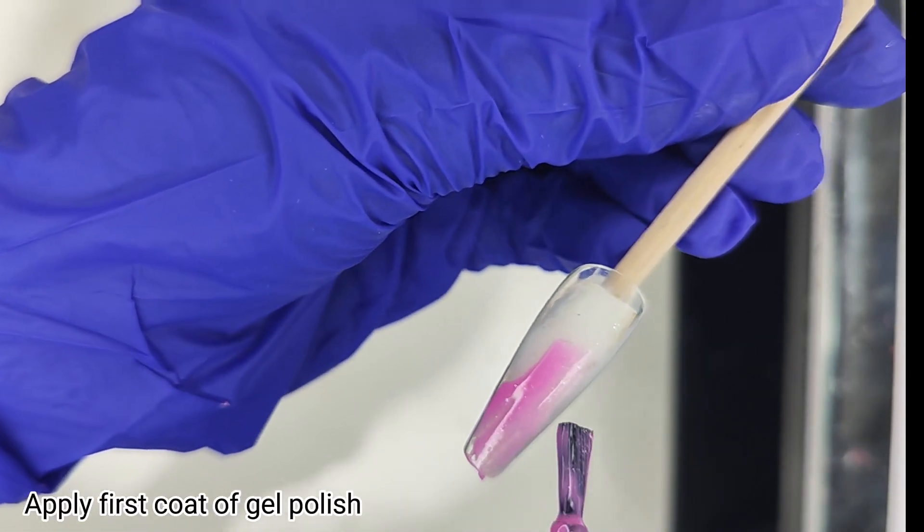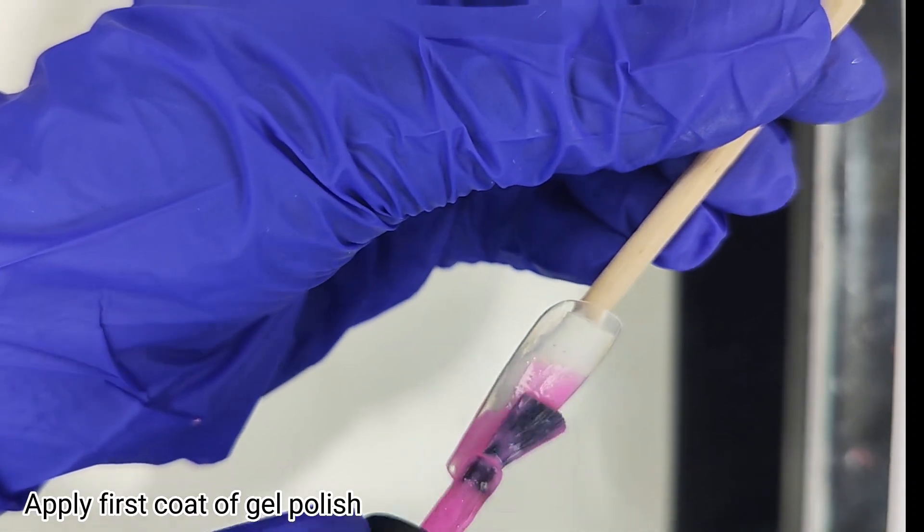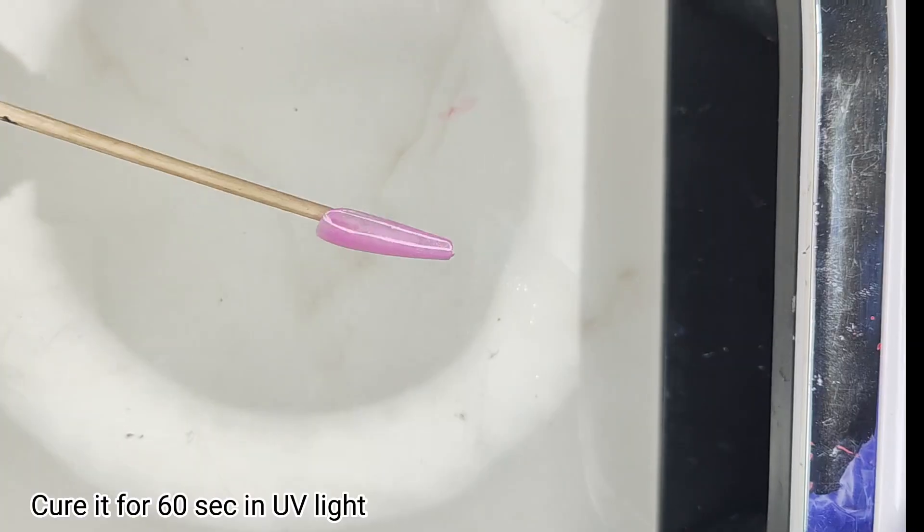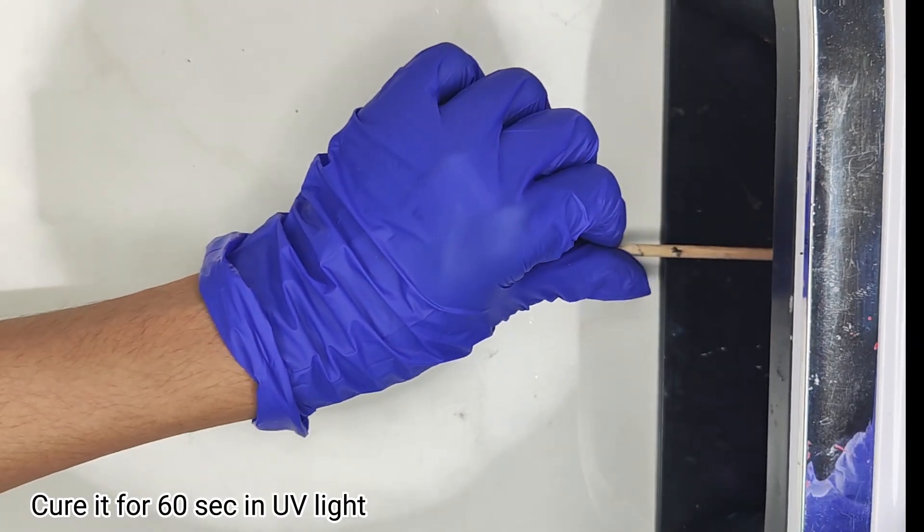Apply first coat of gel polish. Cure it for 60 seconds in UV light.